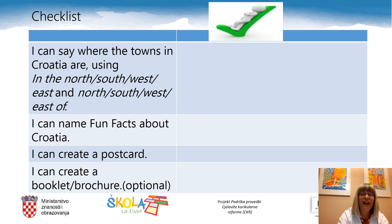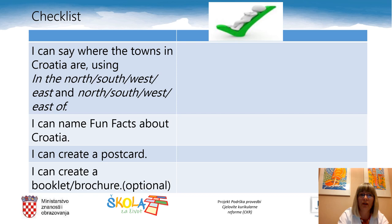We have almost come to the end of today's lesson, but before we say goodbye, let's do the checklist of what you have learned today — the self-evaluation. There are four statements: I can say where the towns in Croatia are using in the north, south, west or east, and north or south or west or east of. I can name fun facts about Croatia. I can create a postcard. I can create a booklet or brochure — which was optional. Please go through the statements and tick the boxes.